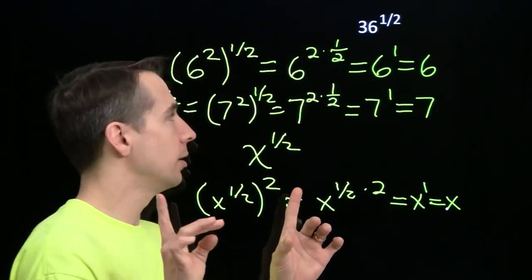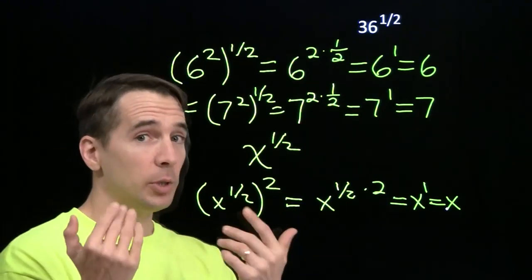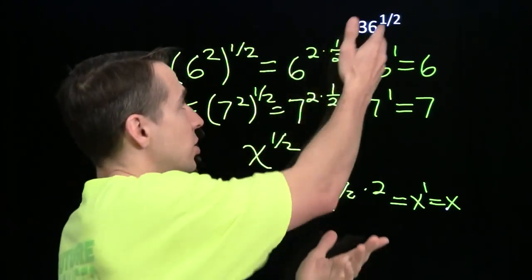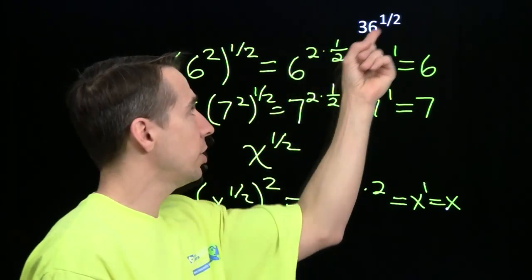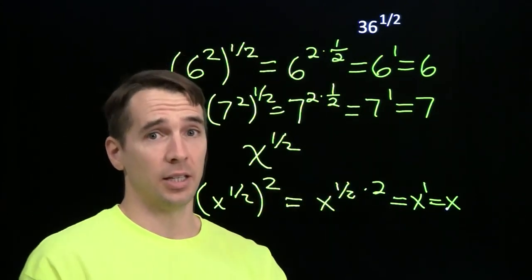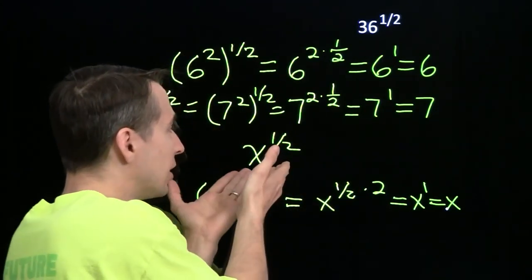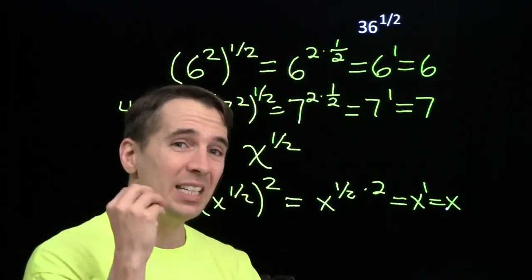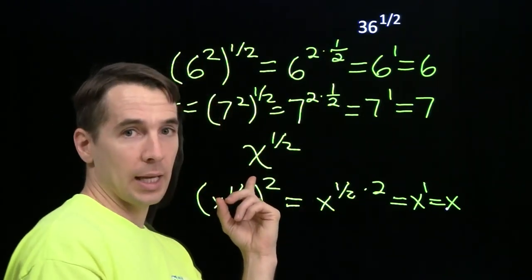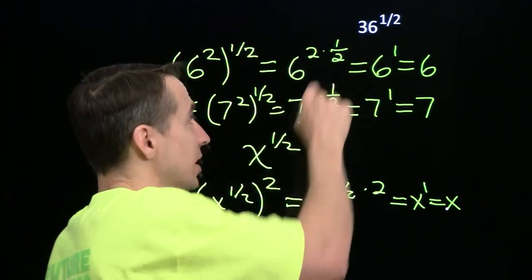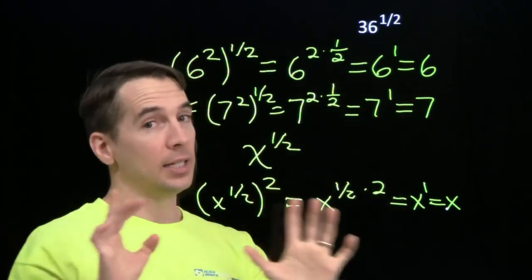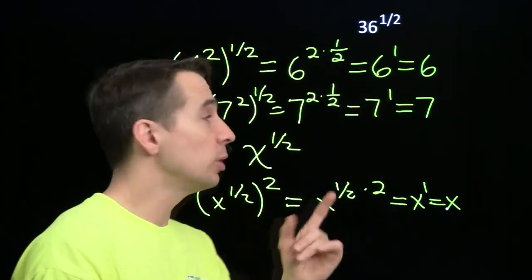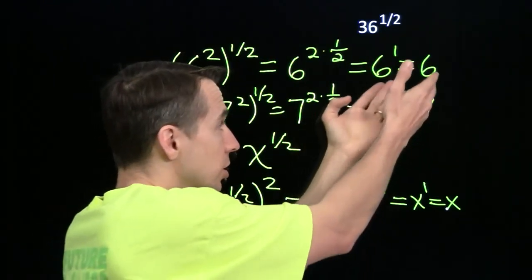Now, wait a second. I have to be careful here. And I know some of you might be saying, what about negative 6? If you square negative 6, you get 36. Why can't 36 to the 1 half be negative 6? So we're going to have to be very careful. We define x to the 1 half. x to the 1 half is the non-negative number we square to get x. Non-negative is very important. That's why 36 to the 1 half is 6, and not negative 6. It would be confusing if this could come out to be two different things. So we define it to just be the 1, just be 6.